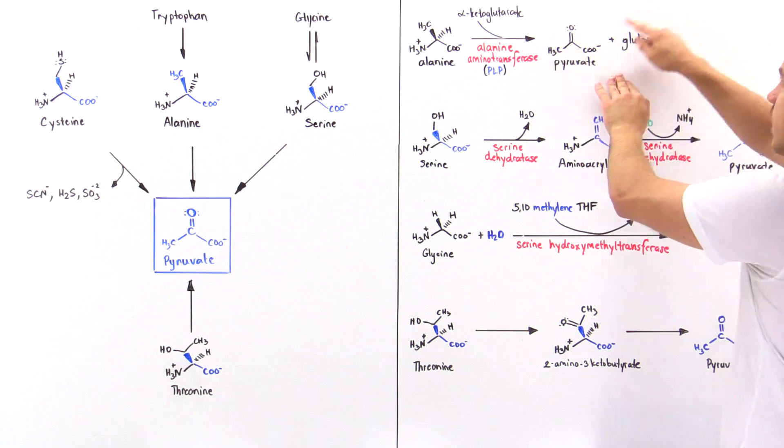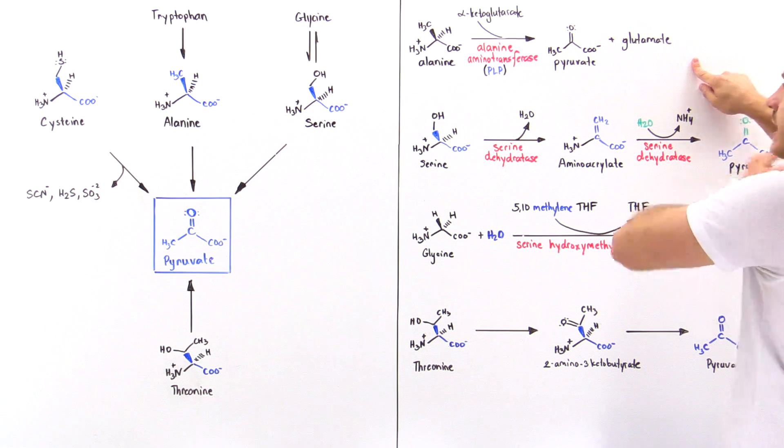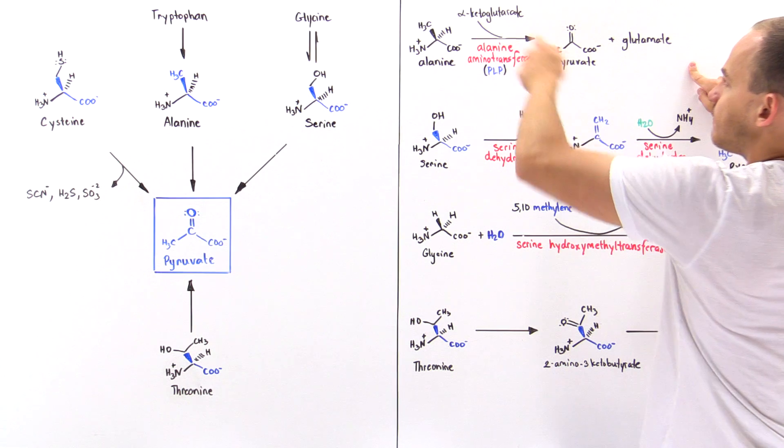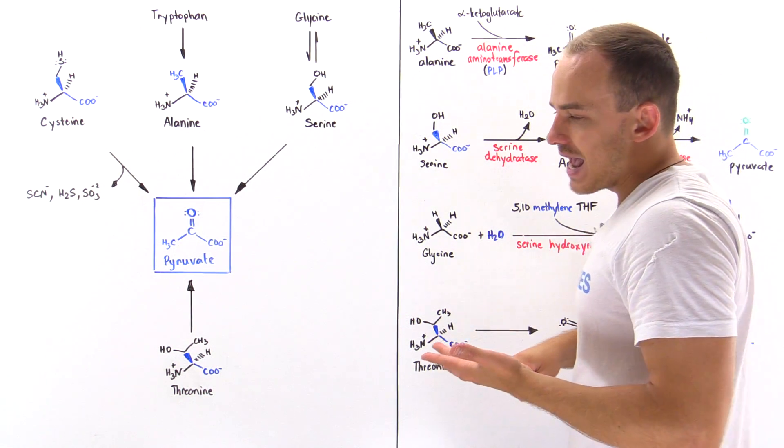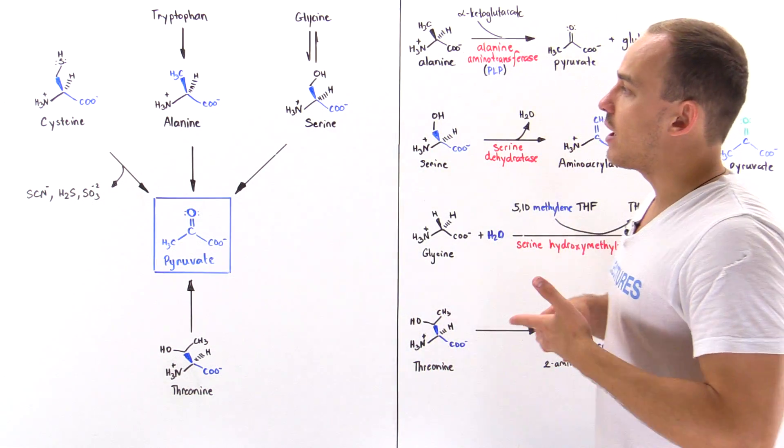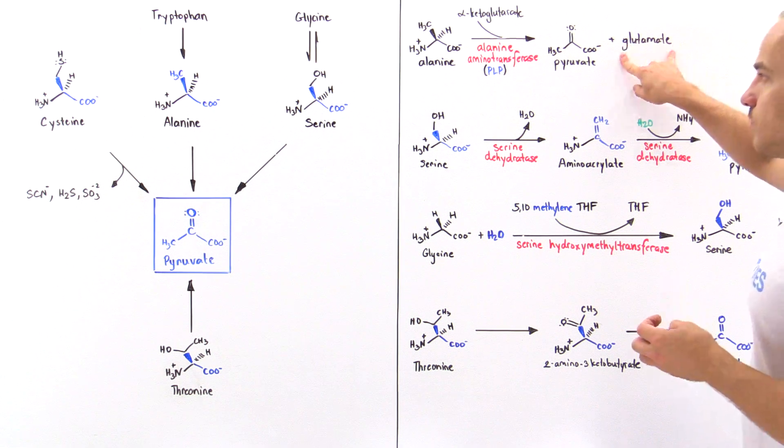We transform that glutamate—we actually release the ammonium group from the glutamate and we reform that alpha-ketoglutarate. In this process we have to use an NAD+ or NADP+ as well as a water molecule to basically remove that ammonium from glutamate.